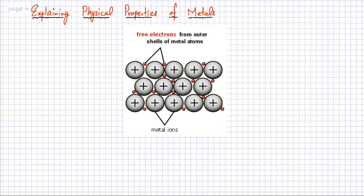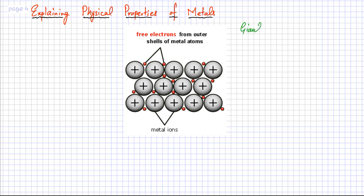Now before moving on to explain those physical properties, I would first go over and revise what the structure of a metal was. When we talk about metals we describe the structure as a giant metallic lattice, and to describe what a giant metallic lattice is I have drawn a diagram in front of you.